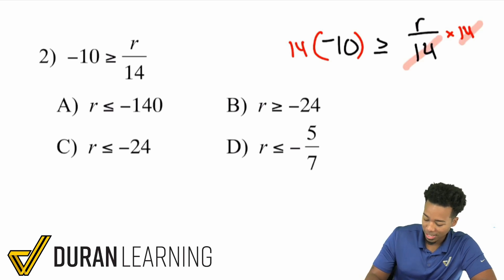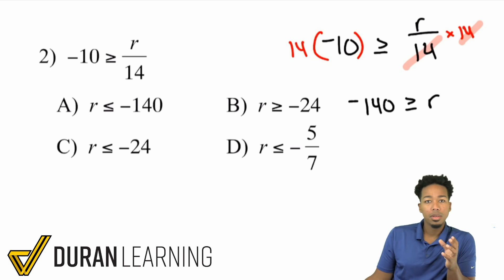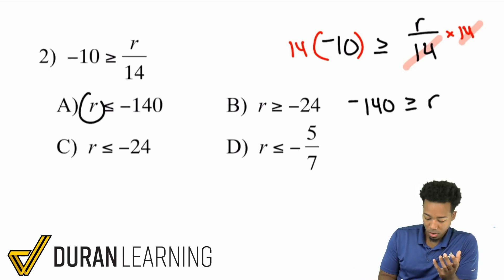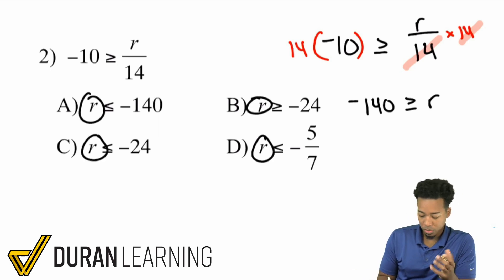And we go ahead and cancel here, giving us negative 140 is greater than or equal to r. So now when you look at your answer choices, notice how the r is on the left side. So what do we do here?